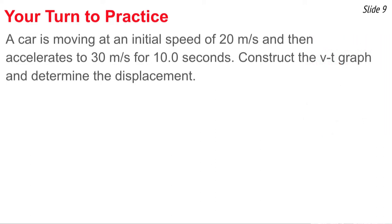Now it's your turn to practice — and you get the difficult one. A car is moving at an initial speed of 20 meters per second and accelerates up to 30 meters per second over 10 seconds. Construct the VT graph and determine the displacement. Sketch the velocity-time graph on scratch paper, solve for displacement using either the trapezoid formula or by breaking the area into a triangle and rectangle. Pause the video, solve the problem, and press play when you're done.